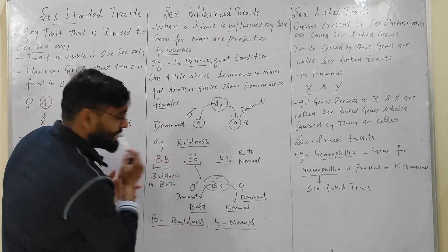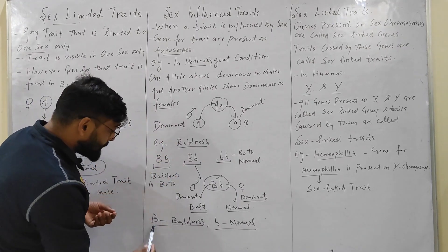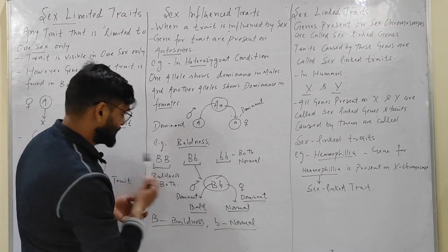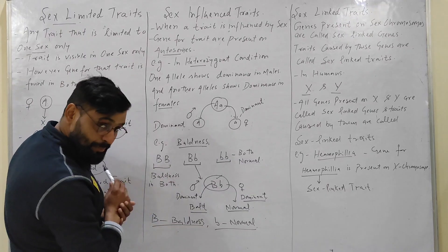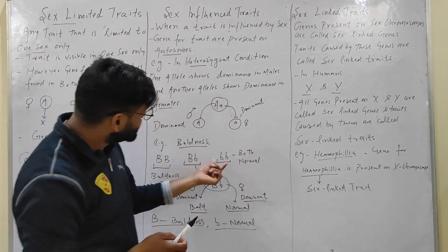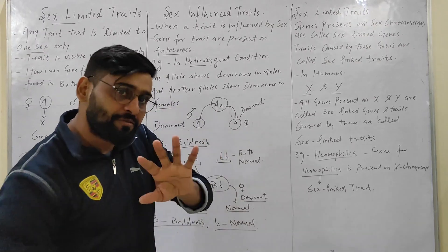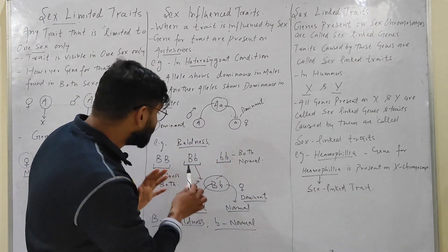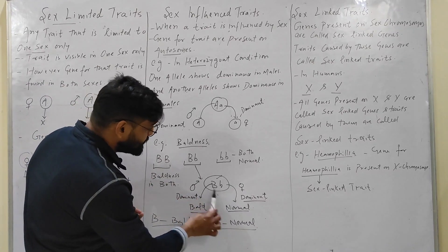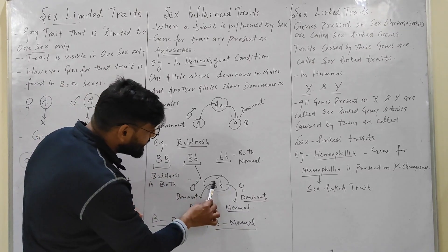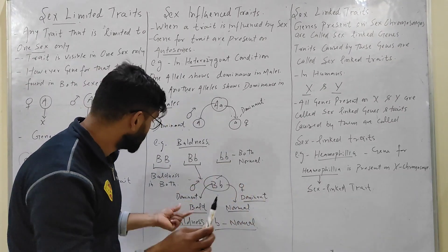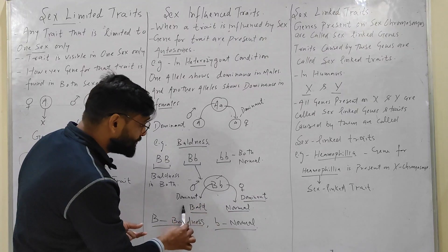For example, dominance in baldness: capital B causes baldness and small b is for normal hair. If both capital B alleles are present, it will cause baldness in both male and female. If both small b alleles are present, both male and female will be normal. But in the heterozygous condition, if it is present in male, then capital B acts as dominant and causes baldness.